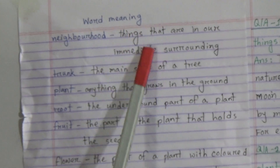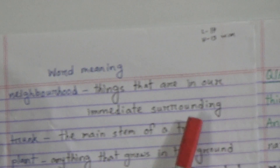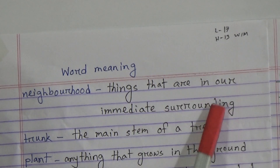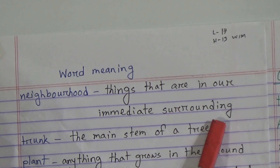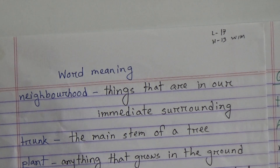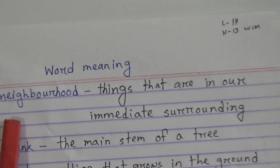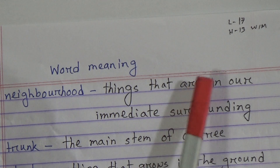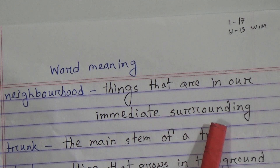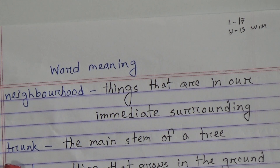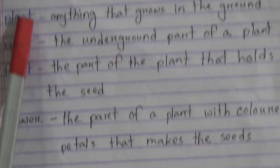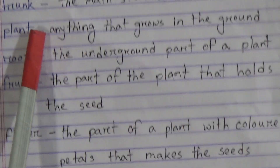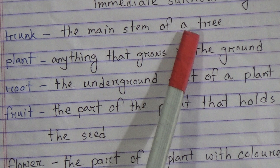What meaning? Neighborhood. The meaning of neighborhood is things that are in our immediate surrounding. This is your revision class. Next, what meaning? Trunk. The meaning of trunk is the main stem of a tree.